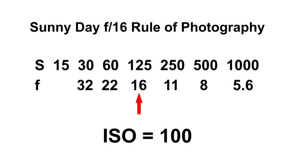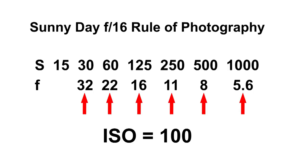Here's our F-16 rule again: 1/125th of a second and F-16. Let's say that you needed to do some stop action and you needed more speed. All you have to do, since this is the starting point, is change your speed to 1/250th of a second and your F-stop to F-11. So the F-16 rule is your starting point, and from there you can access all of these settings depending on the type of photography and the needs of the picture you're trying to capture.